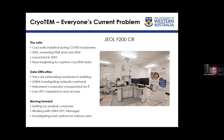We've set up an analysis computer so we can try to do processing in-house. We were beta testers on the EM data processing portal, and we're hoping that will help. We've started working with the UWA HPC manager, and we're hoping UWA users would be able to use the HPC cluster for free if we can get CryoSPARC running on there. We're investigating the best options for different user groups — UWA, other WA universities, and industry — as the services they can access are different, so it may be almost a case-by-case basis.